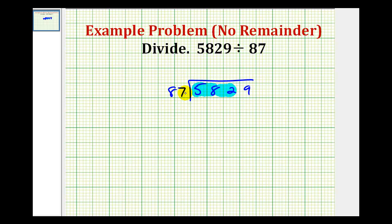If we ask how many 90's go into 600, that's easier to determine. 90 times 6 is 540, so we'll put a 6 in the tens column. Then we find the product of 6 and 87. 6 times 7 is 42, carry the 4. 6 times 8 is 48, plus 4 gives us 52, so 522.